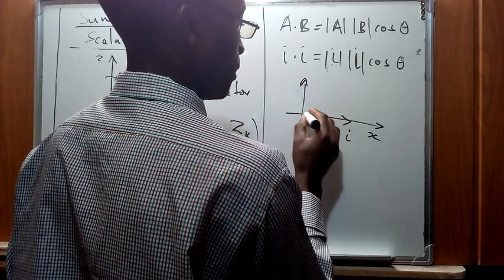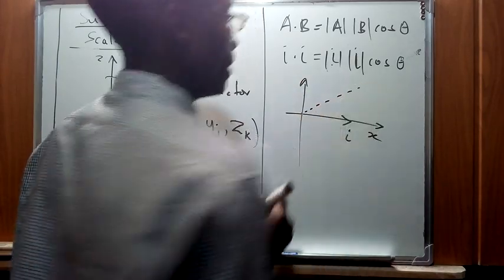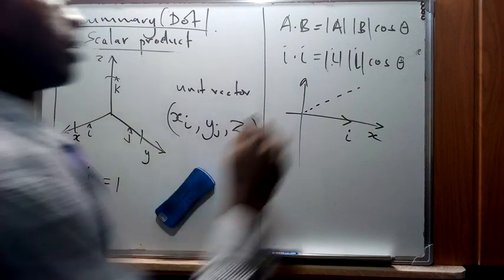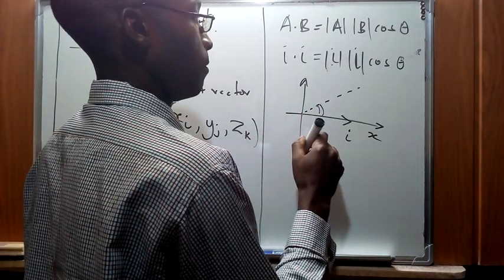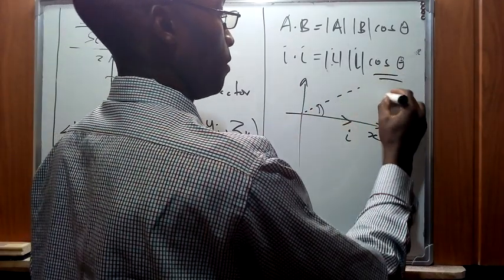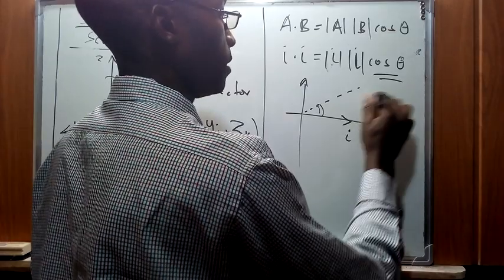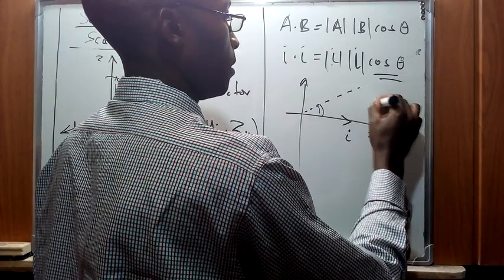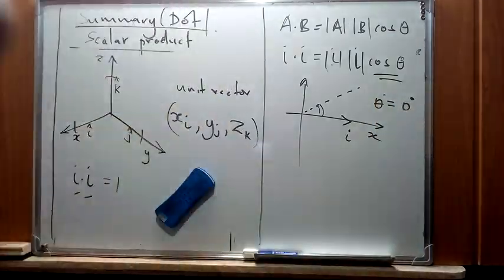So therefore, this is going to be the cosine of zero. I mean, theta is going to be zero degrees. So therefore, from that point...